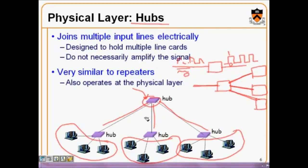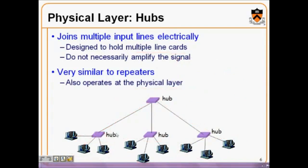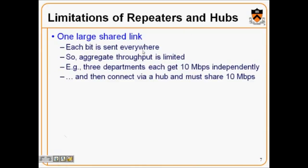Hubs create a kind of star network where multiple wires come out, all carrying the same signal. Whatever comes in is repeated on all outgoing wires, and each hub forwards signals to all other wires except the one it came from. Hubs are designed to hold multiple line cards. They don't amplify the signal — they just repeat it with proper pulse shape. Hubs also operate at the physical layer.